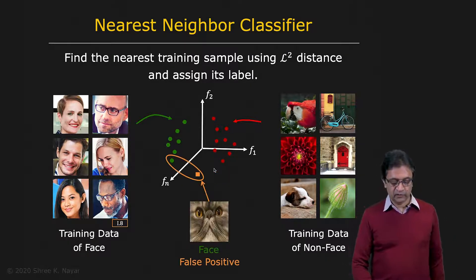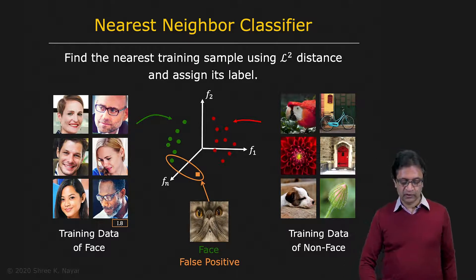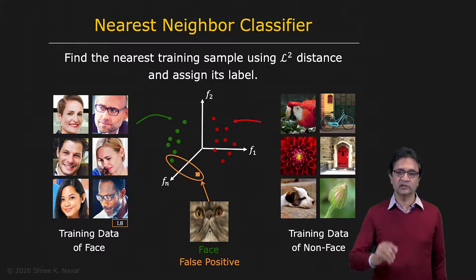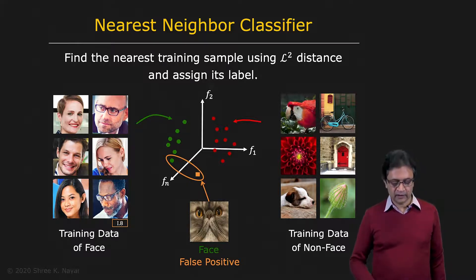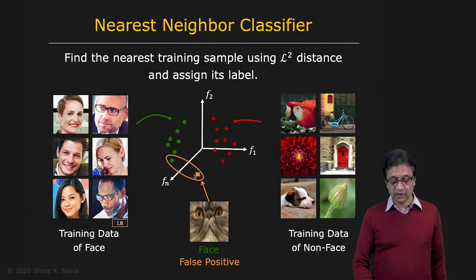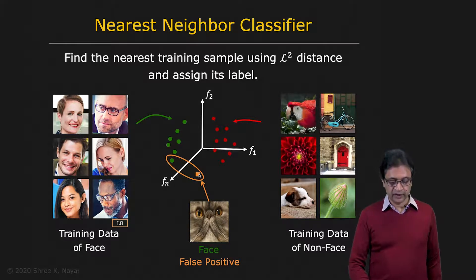What happens if you use this image? In this case, it's not a face — it's not a human face, which is what we are interested in — but it's face-like. And therefore it happens to fall at this point here. The nearest neighbor, albeit far from all other points, is closest to this point right here.